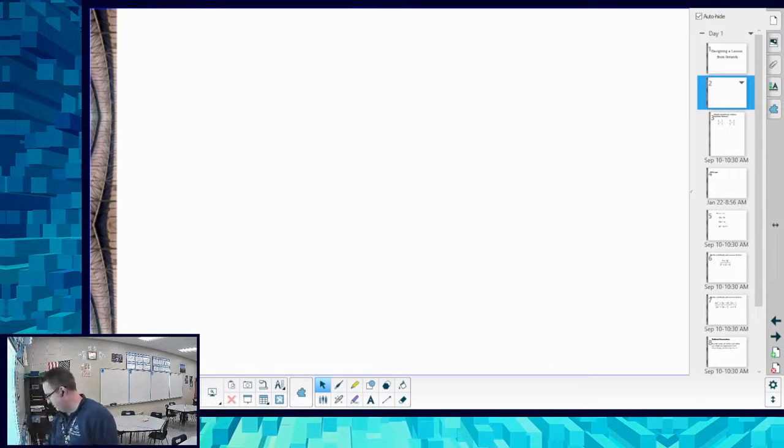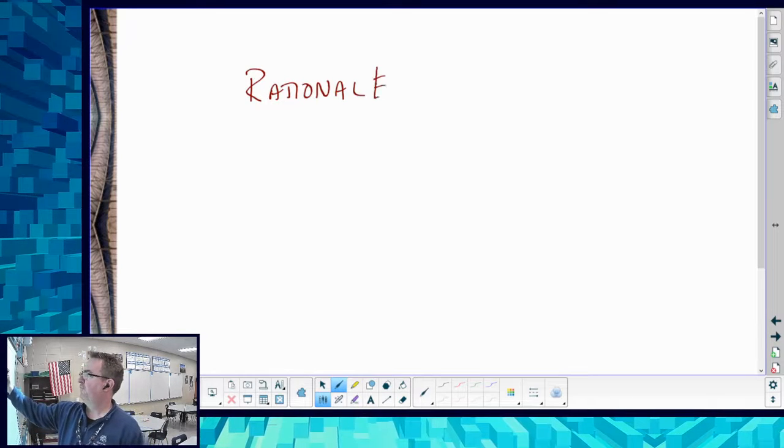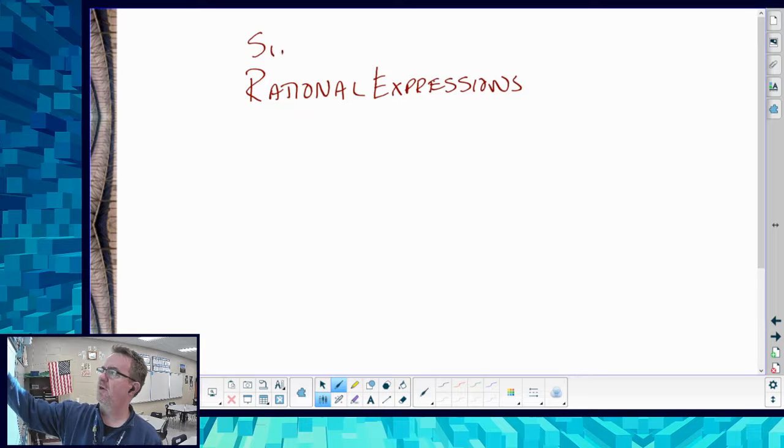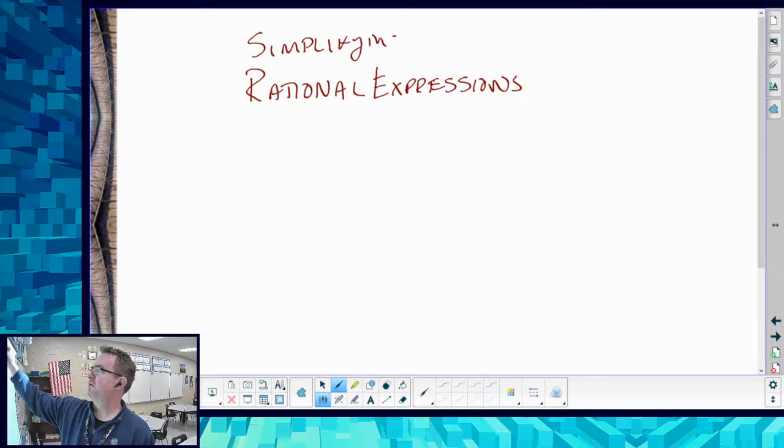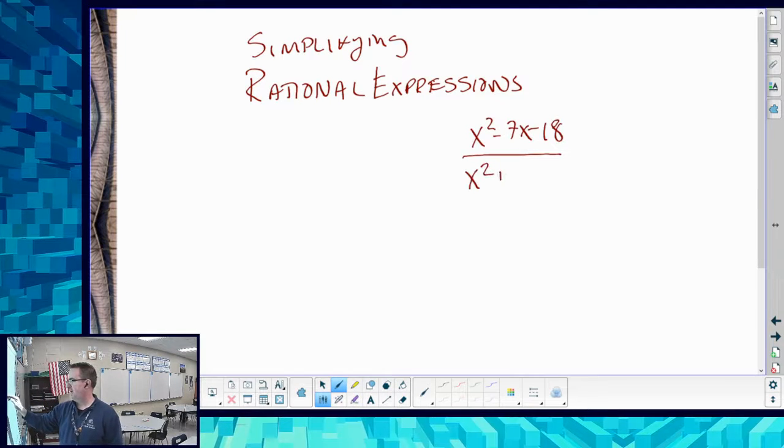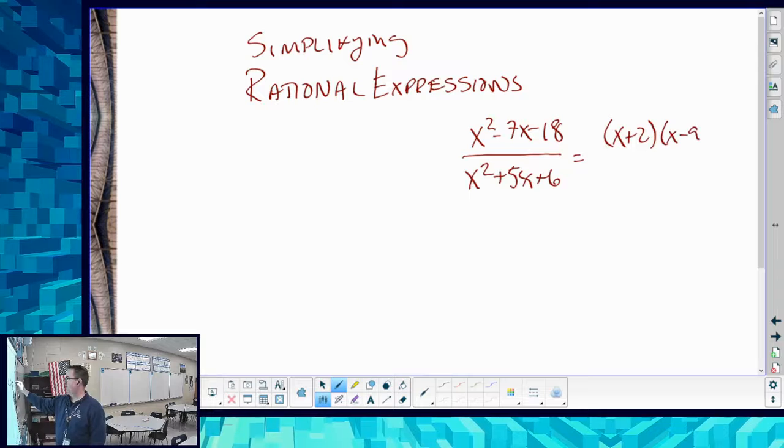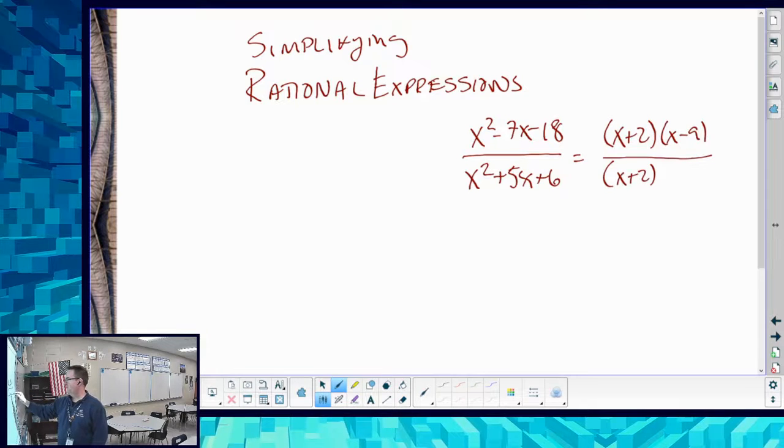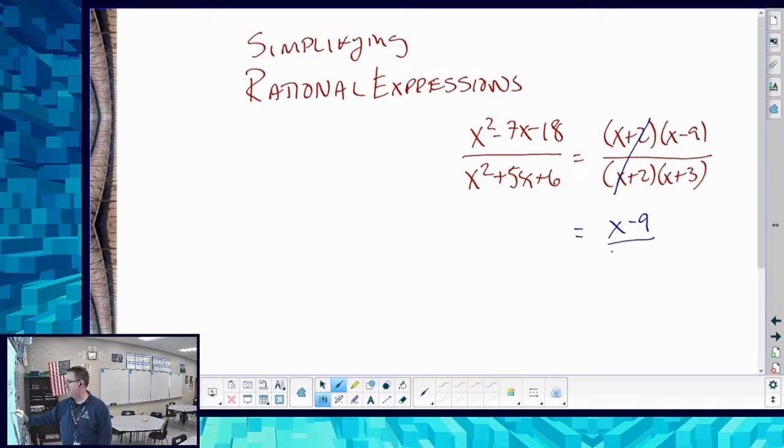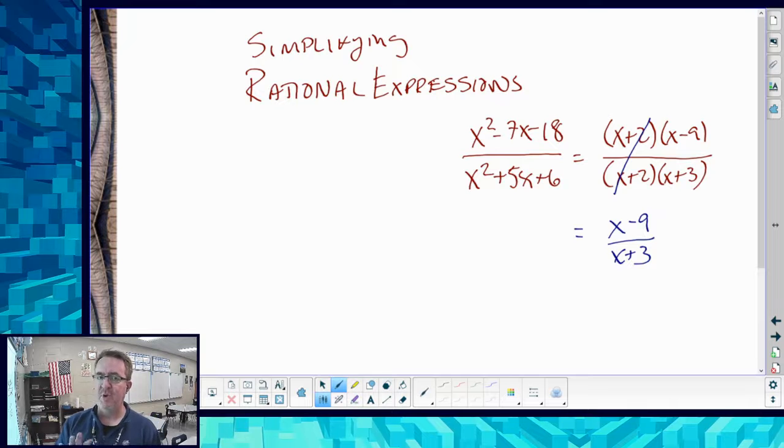So to get started, the lesson that we're doing is going to be on rational expressions. When I think about setting up simplifying rational expressions, I'm talking about taking like x squared minus 7x minus 18 over x squared plus 5x plus 6. If I break this down and we factor it, the simplifying is going to be dividing out that x plus 2. Those would go away and we'd be left over with x minus 9 over x plus 3. Normally I will talk about the domain restrictions on this, but I'm not going to do that in this first lesson as we don't want to get our students' feet wet.